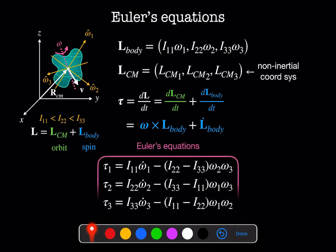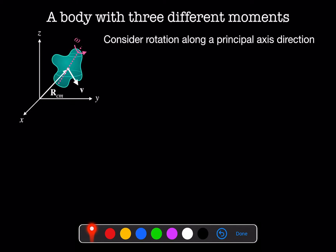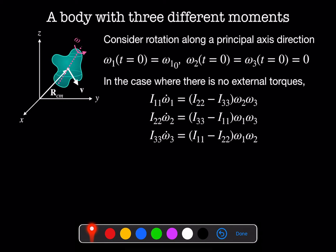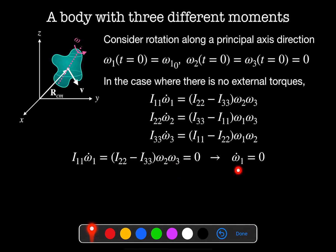These equations are collectively known as Euler's equations. We'll start by looking at a body that is rotating along one of its principal axis directions — let's say omega-1. At time t equals 0, it's rotating at angular frequency omega-1-naught in the omega-1 direction and 0 in the other two directions. When there are no external torques on our system, the torque-free Euler equation for the first principal axis says that i11 times the rate of change of omega-1 is equal to (i22 minus i33) times omega-2 times omega-3. But both omega-2 and omega-3 are equal to 0, so omega-1-dot equals 0 — meaning omega-1 stays constant for all time.